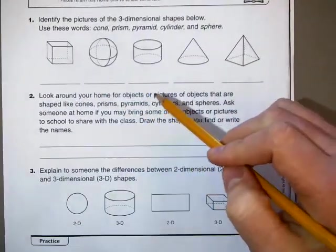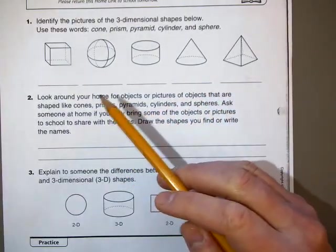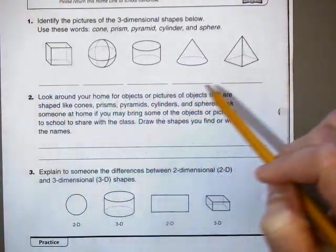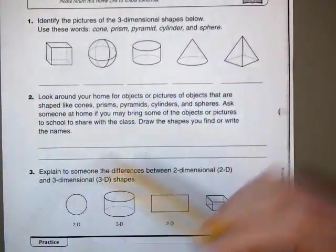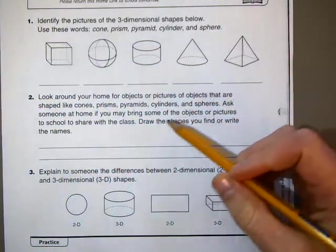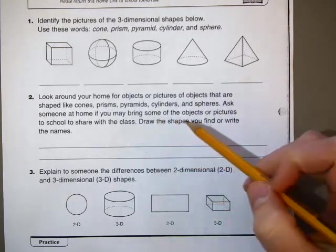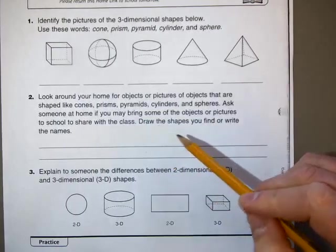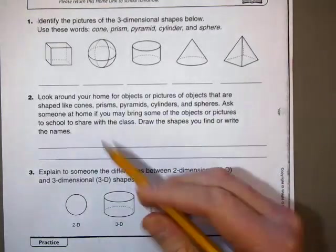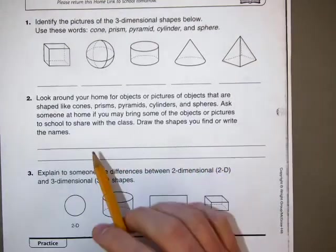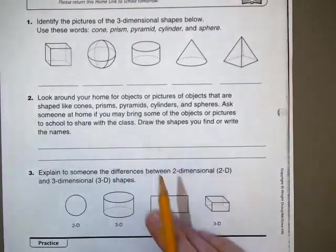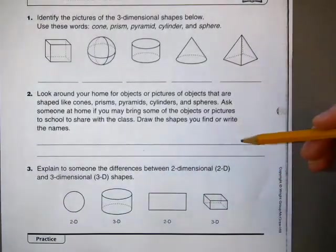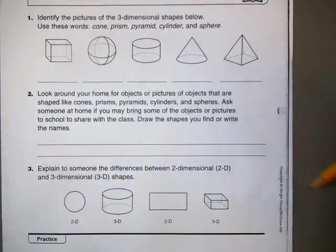Look around your home for objects or pictures of objects that are shaped like cones, prisms, pyramids, cylinders, and spheres. Ask someone at home if you may bring some of the objects or pictures to school to share with the class. Draw the shapes you find or write the names. You can draw or write just maybe four different things you found around the house. If you do want to bring something in to share, please just pick one thing to bring, or maybe two if they're small.